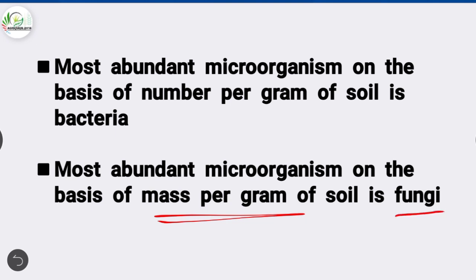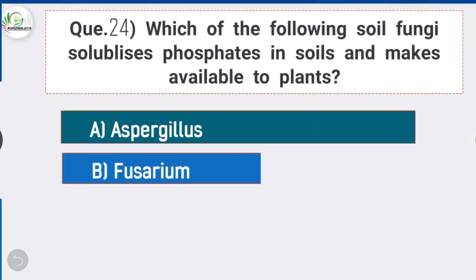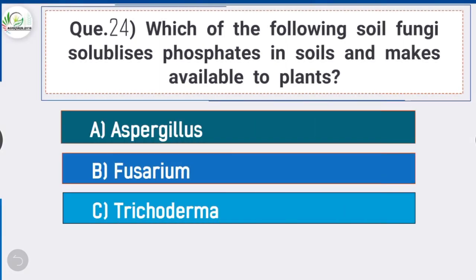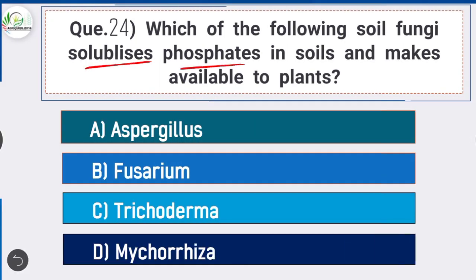Question number 24: Which of the following soil fungi solubilizes phosphate in soils and makes it available to plants? Answer is option D, mycorrhiza. Mycorrhiza is the soil fungi which solubilizes phosphate in soil and makes it available to plants.